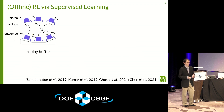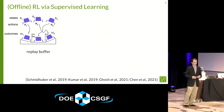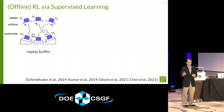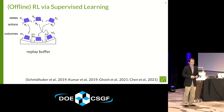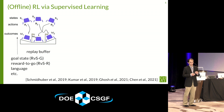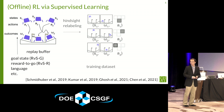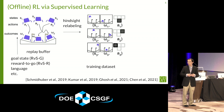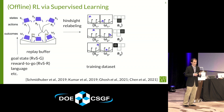I'll talk about an emerging paradigm we coined in our paper: reinforcement learning via supervised learning. It begins with a replay buffer of experience containing states, actions, and outcomes. In this illustrative example, we have a lunar lander module trying to land between the flags. The outcomes can be arbitrary functions of the trajectory — we consider a goal state (RvSG), reward-to-go (RvSR), or even natural language outcomes. You then perform hindsight relabeling to create a training dataset of state, outcome, and action tuples.